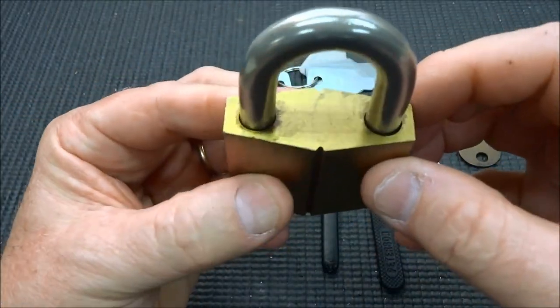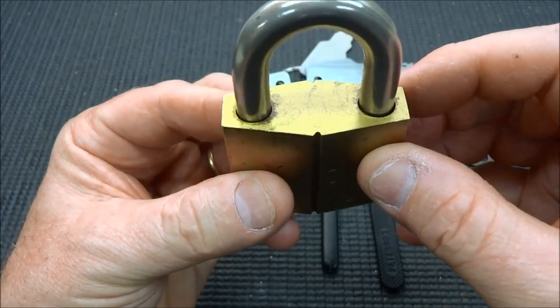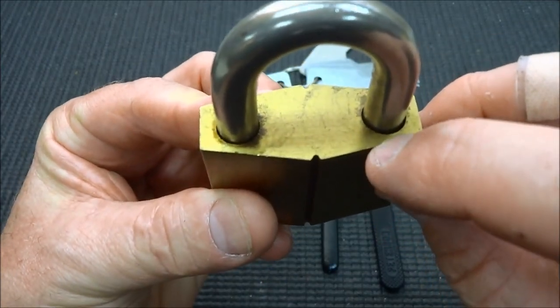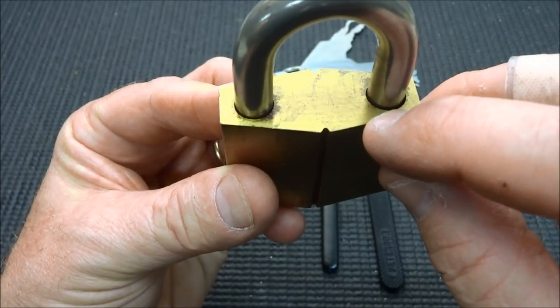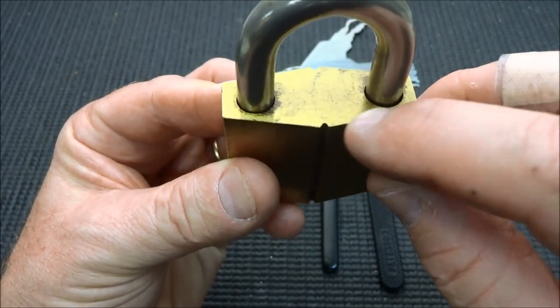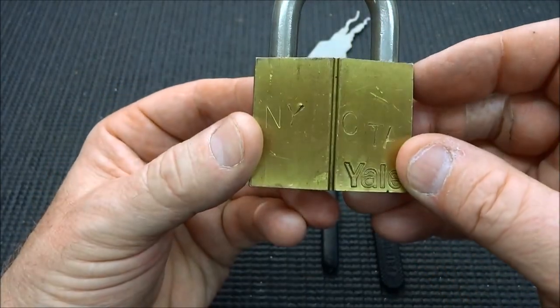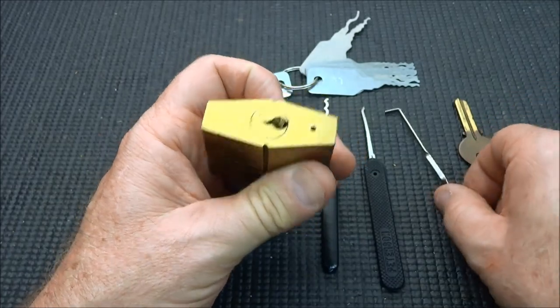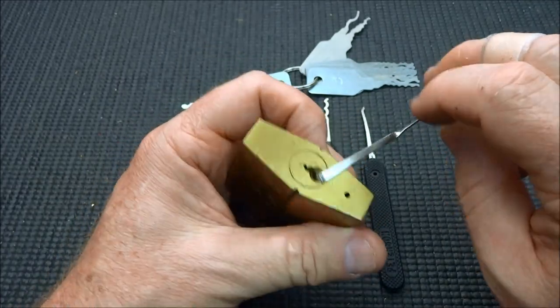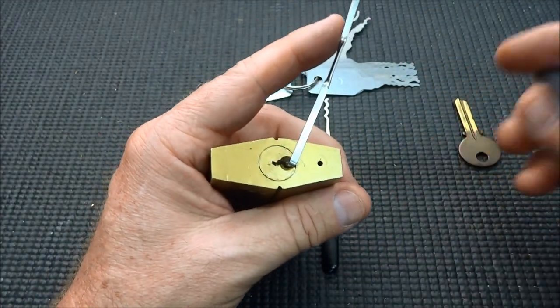The interesting thing about this lock, other than the kind of unique marking, is that it's secure in one way and one way only, and that's in the top. Here it looks like you can shim it, and shims in fact do fit in there, but for some reason I can't overcome the locking balls on this thing. So it's highly resistant to shimming. But let's see if there aren't some other ways we can get into this lock, and believe me, they all surprised me.